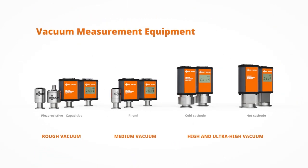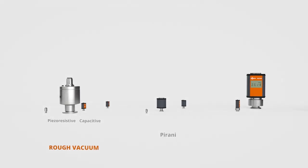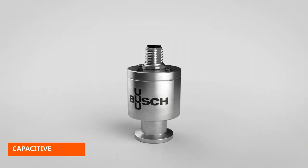Accurate pressure measurement is key in vacuum assisted production. Only the correct pressure can ensure the efficiency of the process and a high-quality end product. In this video, we will show you how vacuum is measured using the capacitive measurement principle.